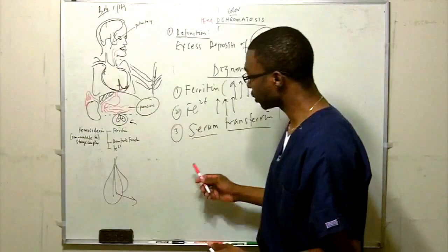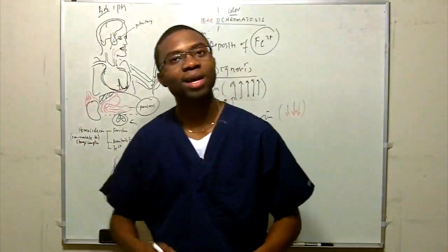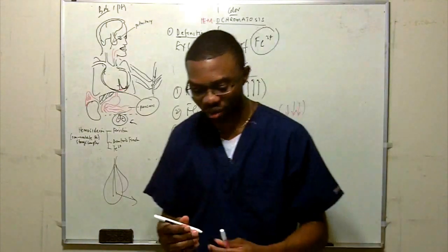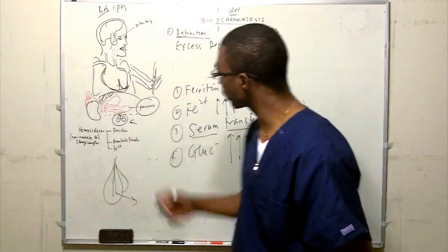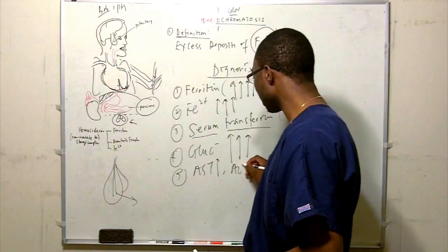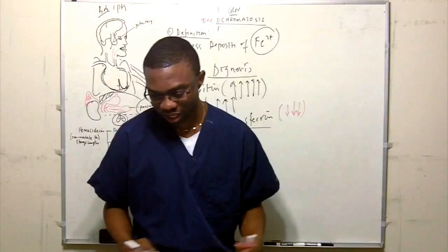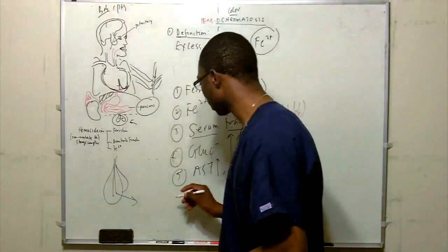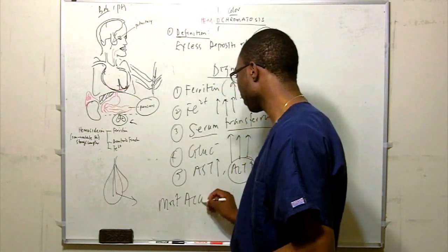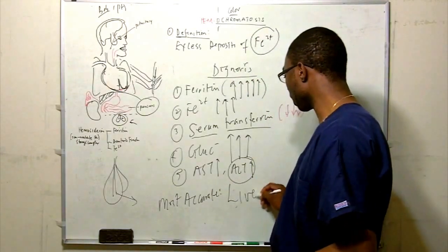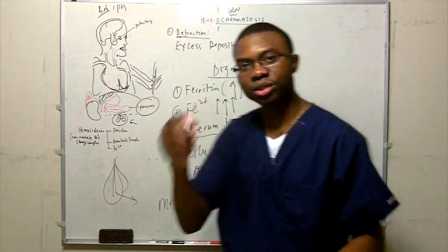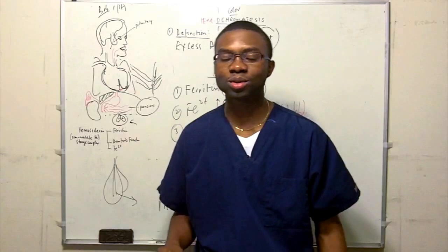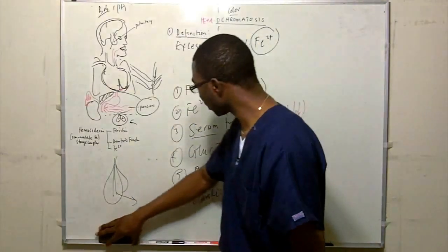Blood sugar is going to show glucose intolerance — because they have diabetes — so blood glucose will be in the diabetic range. Liver function tests can be mildly elevated if they've damaged a lot of hepatocytes; ALT might also be elevated. But how do we really diagnose this condition definitively? The only way is by doing a biopsy — a liver biopsy is the most accurate test.